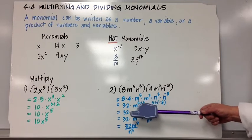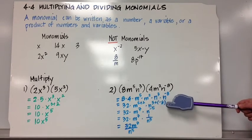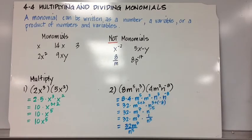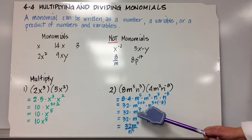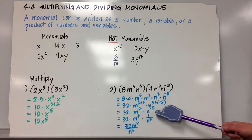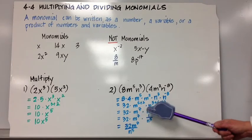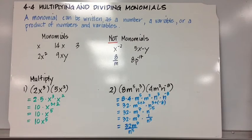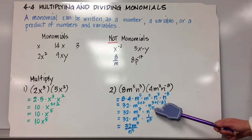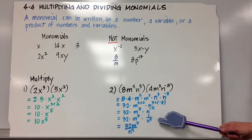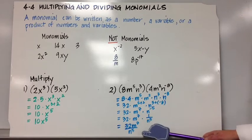m to the 5th times m squared is m to the 5 plus 2. And n cubed times n to the negative 8 is n to the 3 plus negative 8, applying those exponent rules. So that's 32m to the 7th times n to the negative 5th. But I have to take care of that negative exponent because a monomial is not simplified if an exponent is negative. So n to the negative 5 is 1 over n to the positive 5, making the final answer 32m to the 7th over n to the 5th.